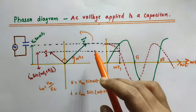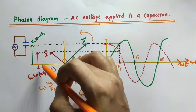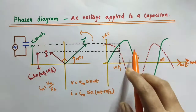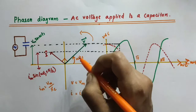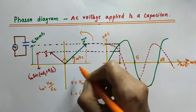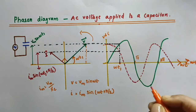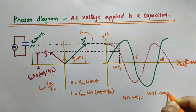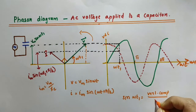Here we have marked the vertical components of the current phasor and the voltage phasor at time t1. To get the graph of V and I versus ωt, we take the vertical components of these two phasors at each and every time. At angle ωt1, the vertical component of the voltage phasor is given by sin(ωt1) = vertical component / hypotenuse, where the hypotenuse is Vm — the amplitude of the voltage. So the vertical component is Vm sin(ωt1).